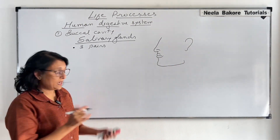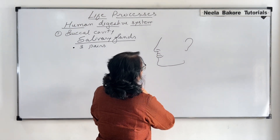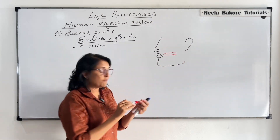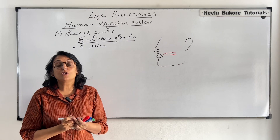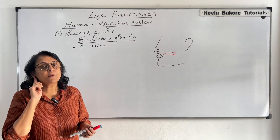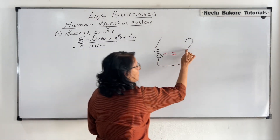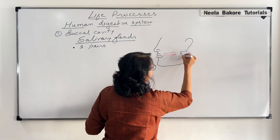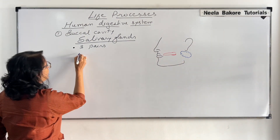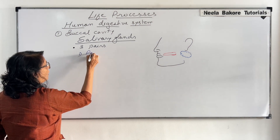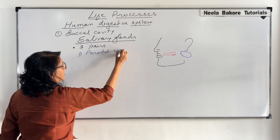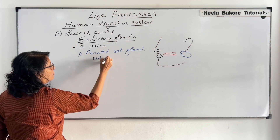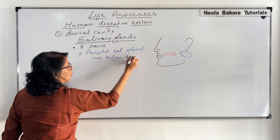There are three pairs. We are seeing the glands from one side. The first pair, which is the largest, is known as the parotid salivary gland and it is present just underneath our earlobe. So here, just underneath the earlobe, there is a large salivary gland. This is the largest salivary gland and it is called the parotid salivary gland, located just below the earlobe.